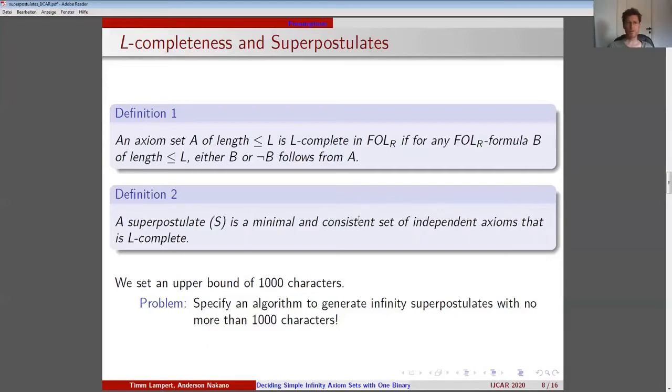We define our term superpostulate by referring to L-completeness. A superpostulate is a minimal and consistent set of independent axioms that is L-complete. That a superpostulate is minimal means it does not contain any redundant part. We set an upper bound of 1000 characters. To compare, DLOR has 331 characters. So our aim became to solve the following problem: specify an algorithm to generate infinity superpostulates with no more than 1000 characters.